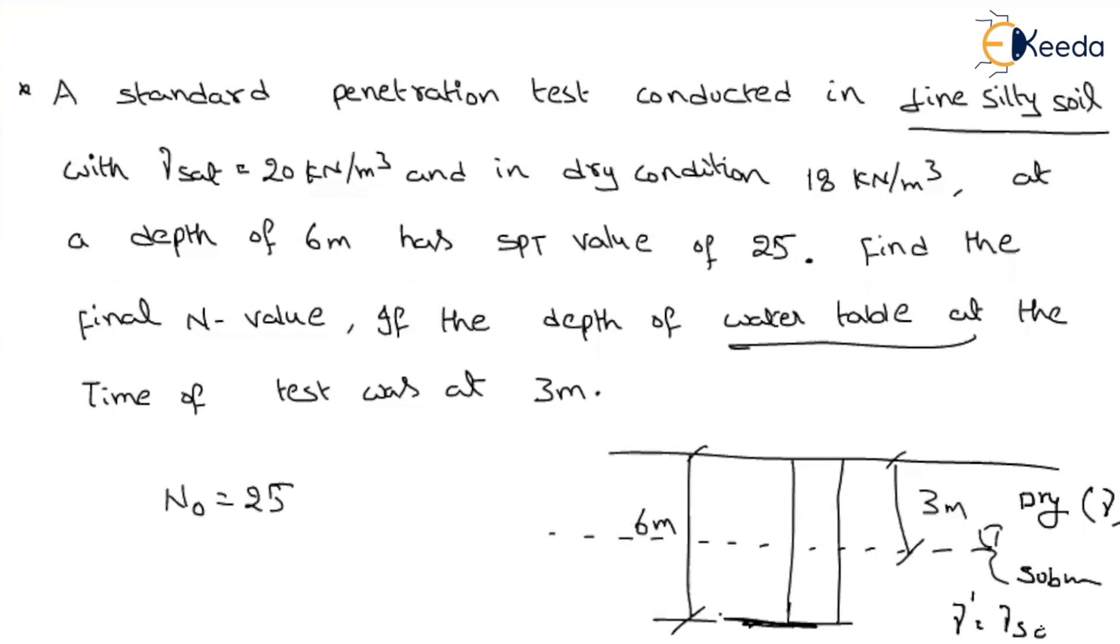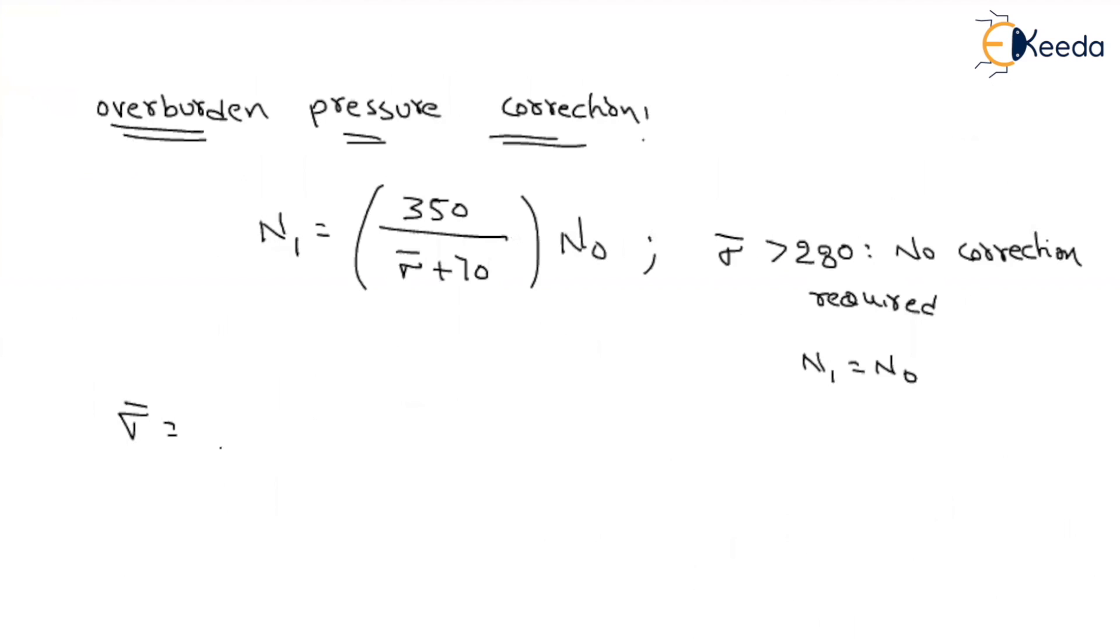What is the submerged value? Gamma saturation minus gamma W. Gamma saturation given as 20. Gamma W given as 9.81. What is the submerged value? That will be equal to 20 minus 9.81. You will get it as around 10.19 kilonewton per meter cube. What is the overburden pressure there? That means what is the vertical stress? 3 times dry value plus remaining 3 times the submerged value gamma dash. That will be equal to 3 into 18 plus 10.19. If you solve this, we will get it around 84.57 kilonewton per meter square.